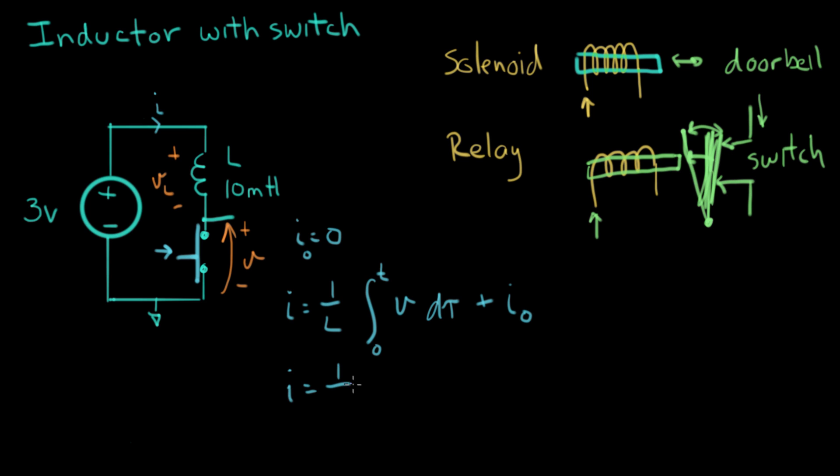Let's fill in what we know. I equals one over 10 millihenries. And V is a constant. V is a constant three volts times three. And it's the integral of dτ from zero to T. And I zero is zero. And then we get the final form, which is I equals three over 10 millihenries times the integral from zero to T of dτ is just T. And that's the answer.